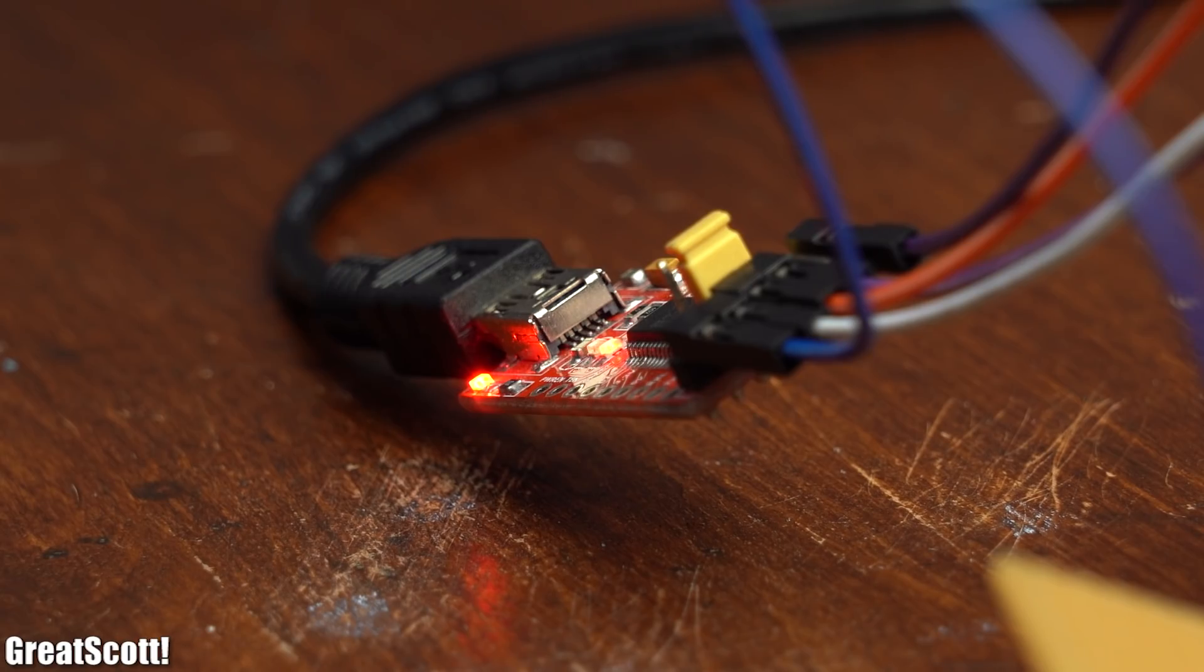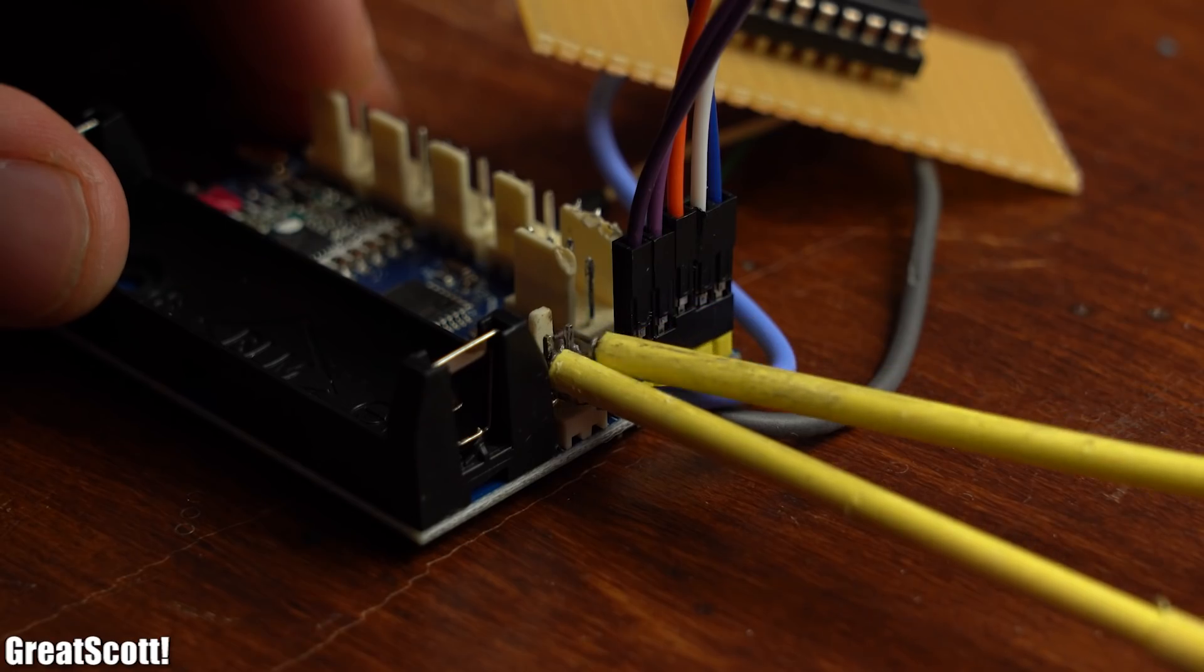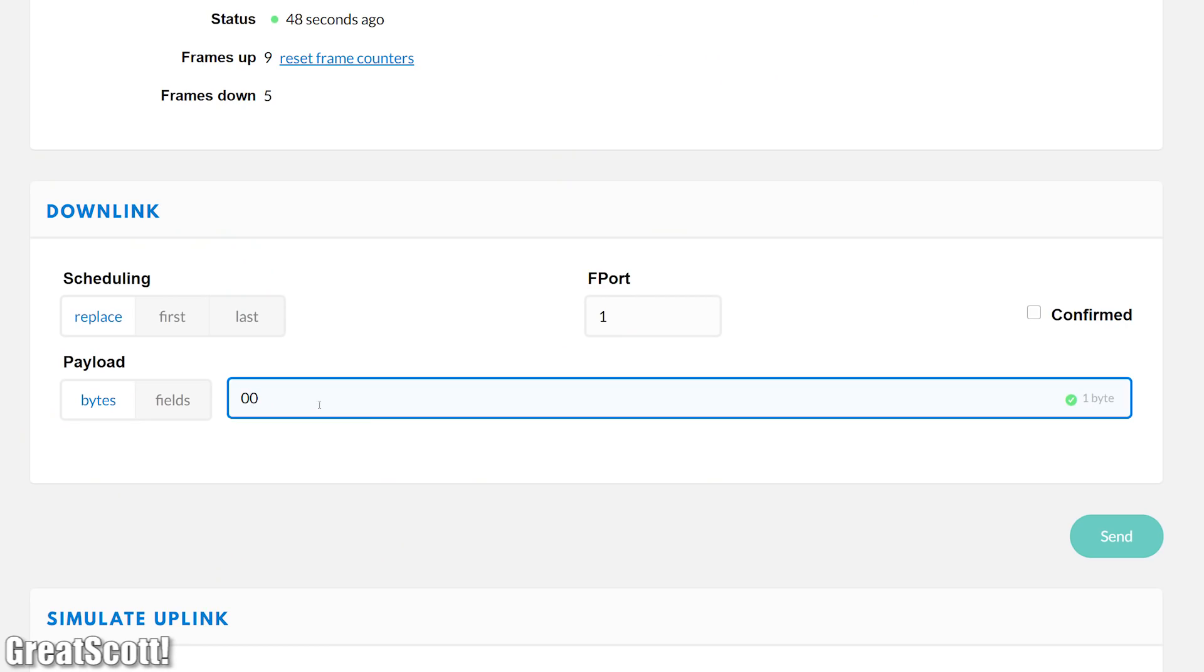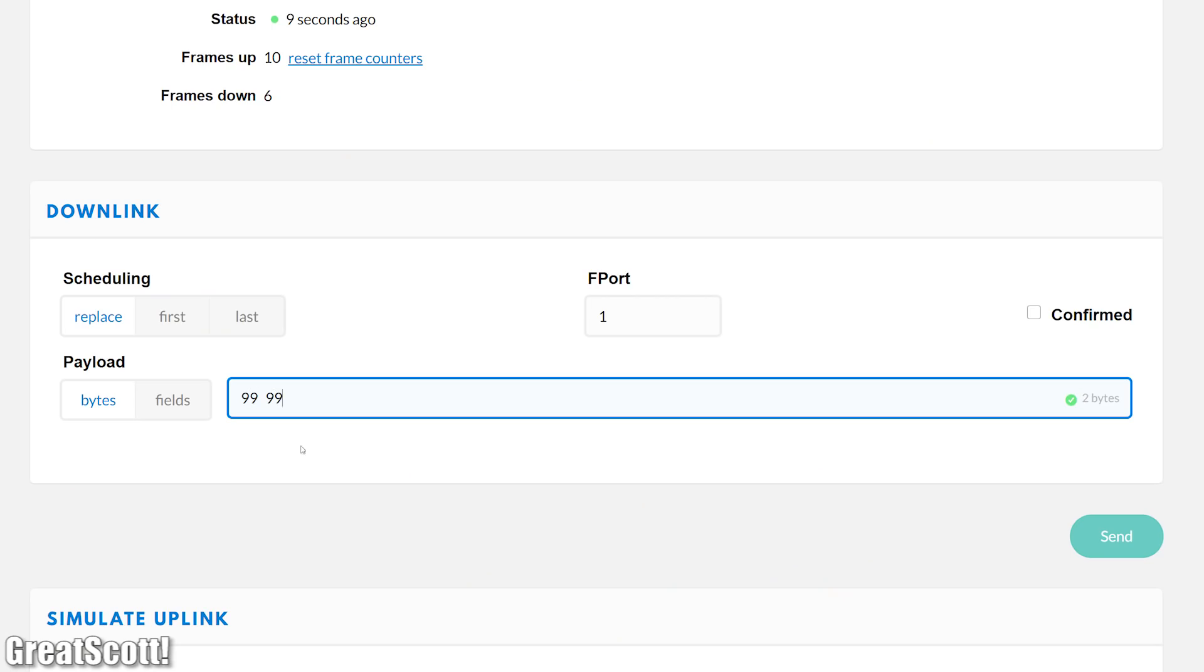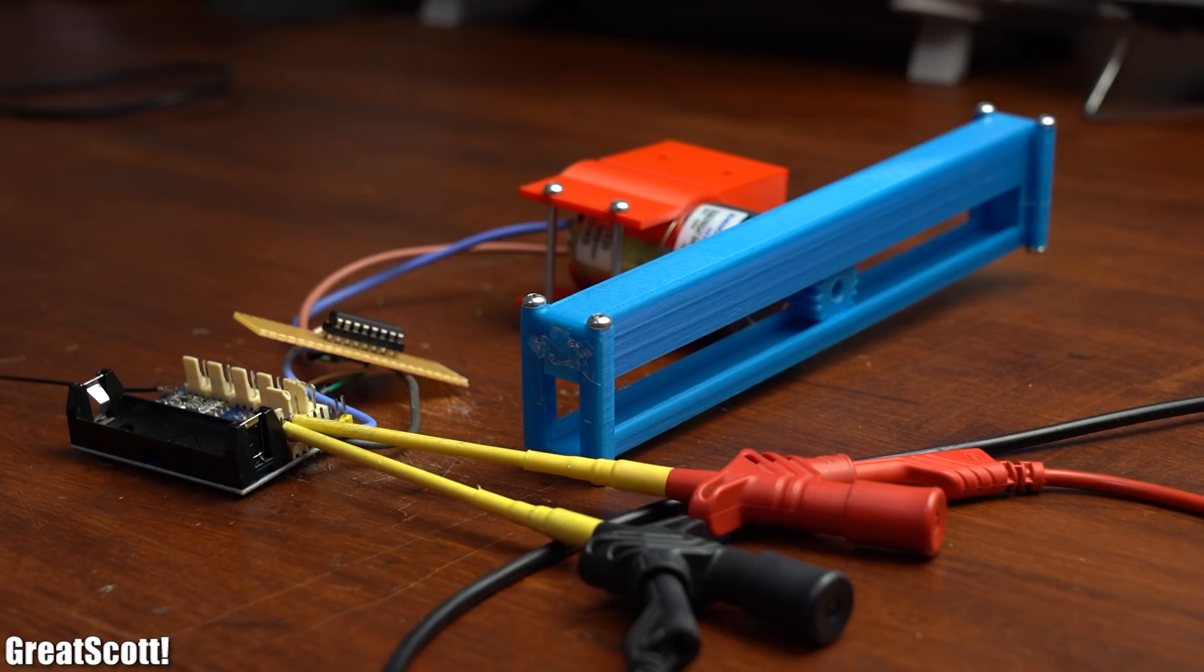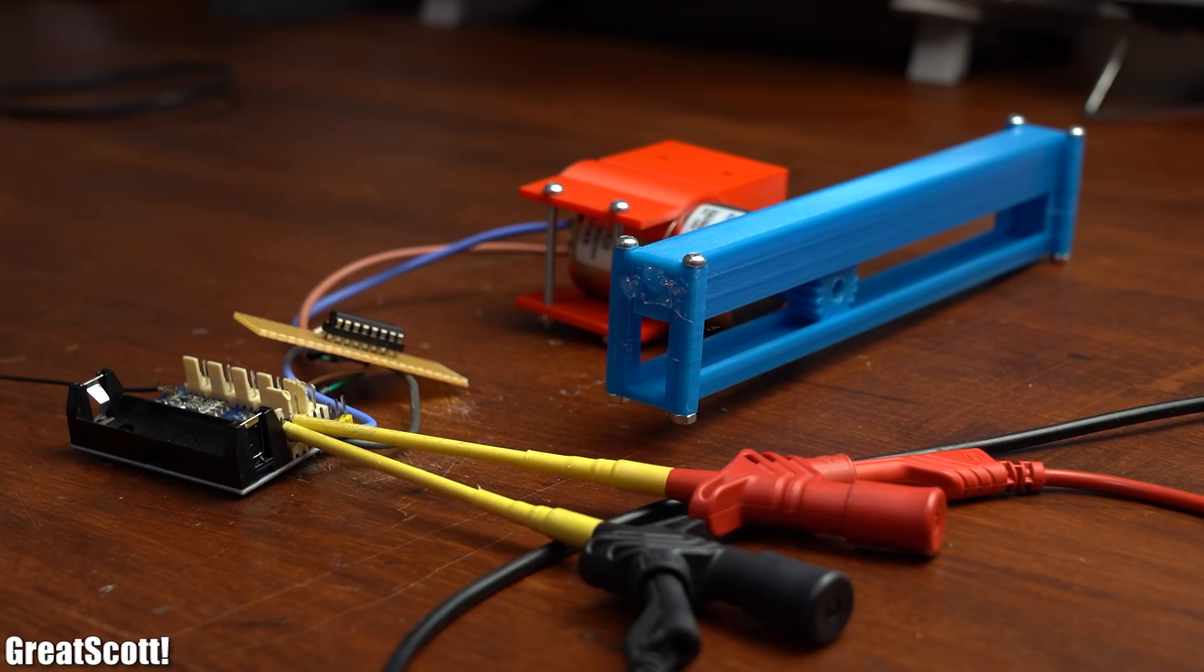After uploading this finished test code and powering everything up I send over 1 byte which promptly let the motor spin one way. Afterward I send over 2 bytes which lets it spin the other way, perfect.